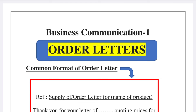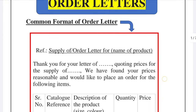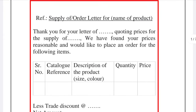In an order letter, you first check the quotation letter and then write the order. The format follows a common letter structure. The reference line typically reads 'Supply of' or 'Order for' followed by the name of the product. In your reference you acknowledge that you have the quotation in hand.